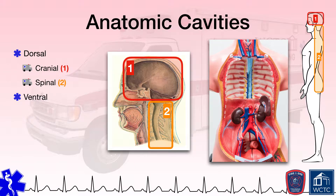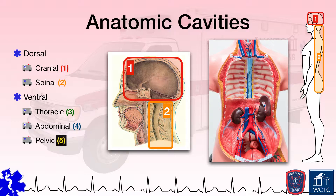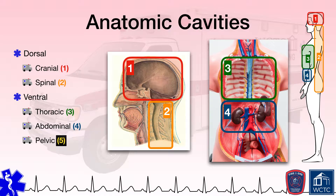Toward the anterior, ventral, or front of the body are the thoracic, abdominal, and pelvic cavities. The thoracic cavity is home to the heart, lungs, and great vessels. The abdominal cavity contains numerous digestive and endocrine organs. Within the pelvic cavity are digestive organs, along with female reproductive organs. Taken together, the abdominal and pelvic cavities are often referred to as the abdominal pelvic cavity.